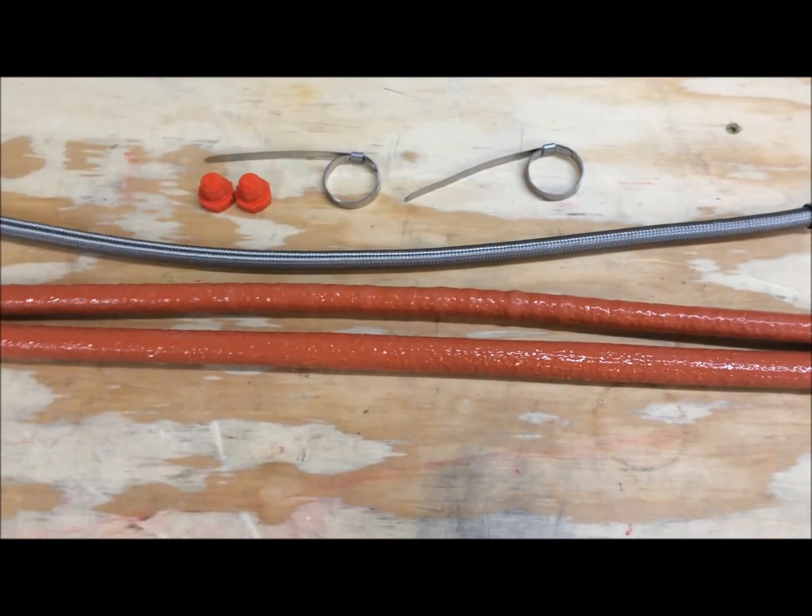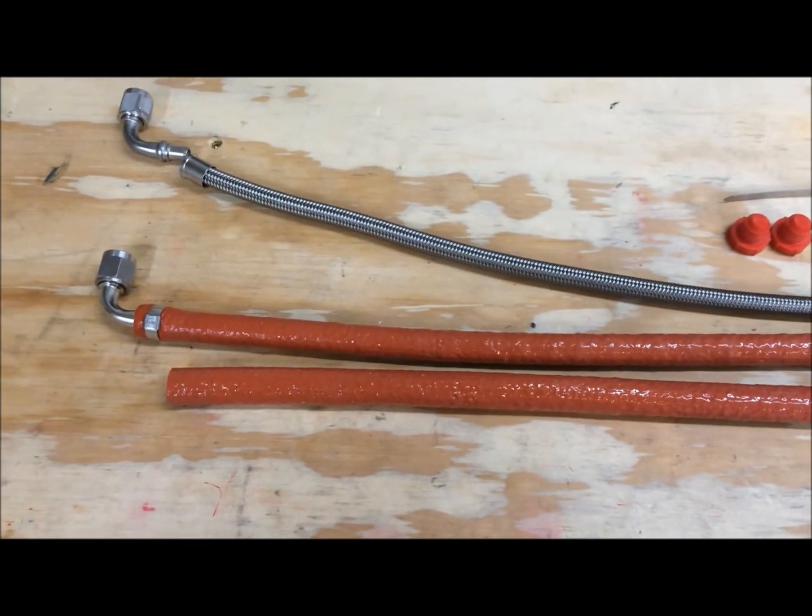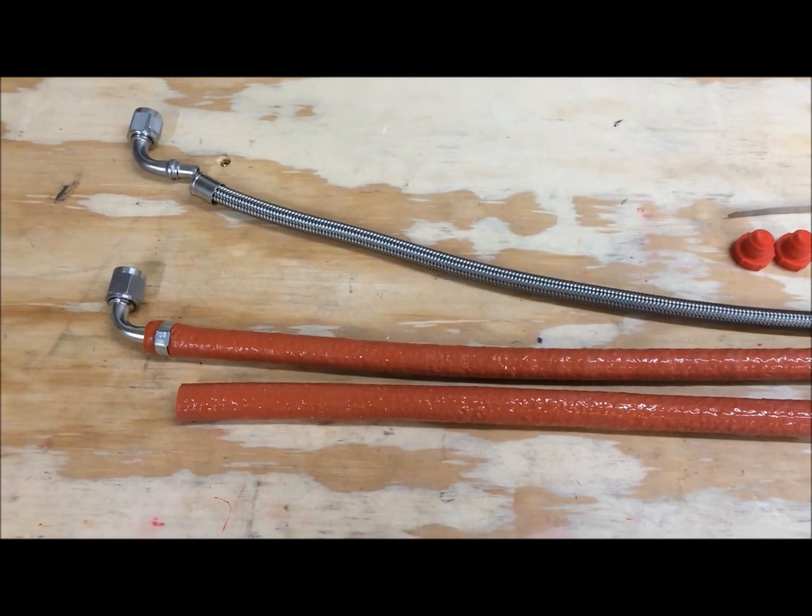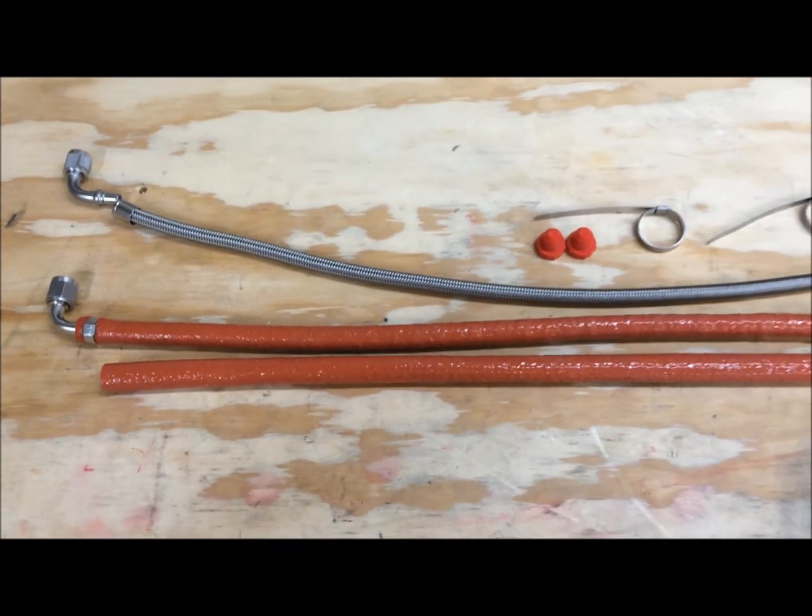After we've cut the hose, it's time to lay out all the components. You can see that organization is very important. So here we have the hose laid out as well as all the fittings, fire sleeve, fire sleeve bands and covers.